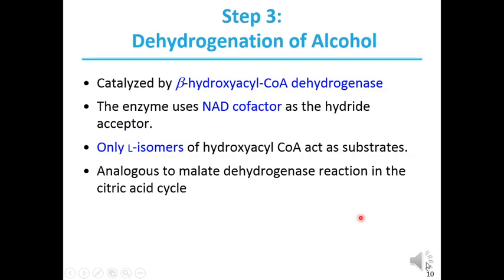The third step in the beta-oxidation pathway involves dehydrogenation of an alcohol, catalyzed by the enzyme beta-hydroxyacyl-CoA dehydrogenase. The enzyme uses NAD as a cofactor, and NAD is the hydride acceptor. Only L-isomers of hydroxyacyl-CoA act as substrates. This reaction is analogous to the malate dehydrogenase reaction in the citric acid cycle.